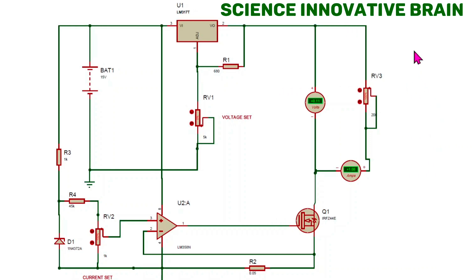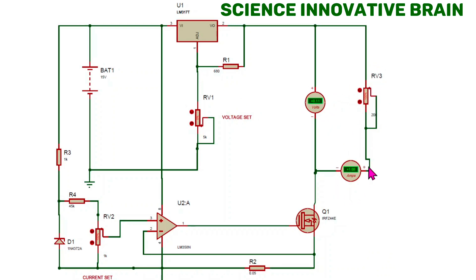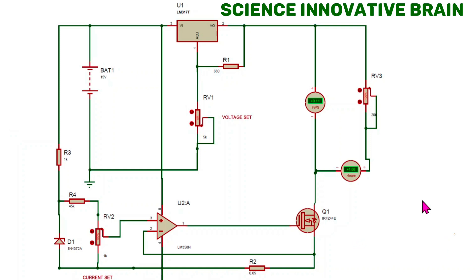Welcome to Science Innovative Brain. In today's video lecture we will discuss the constant current constant voltage power supply. We can set the output voltage and output current with the help of potentiometers. A voltmeter is connected across the load and an ammeter is connected in series with the load. Before discussing the circuitry, first we will check the operation of current limiting and voltage setting.